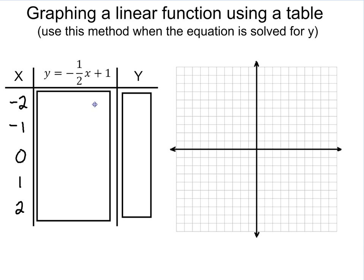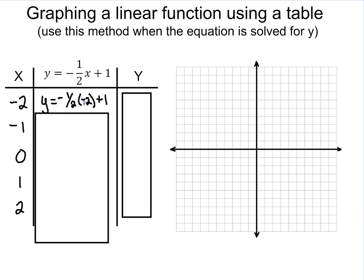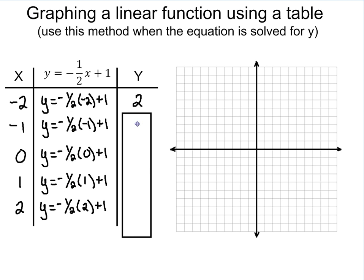And even though this one has a fraction, the steps still stay the same. You have negative 1 half times negative 2 plus 1, which in this case gives you 2. We're going to continue these values all the way down. So you have negative 1 half times negative 1, negative 1 half times 0, negative 1 half times 1, and negative 1 half times 2, all plus 1.